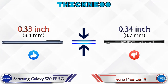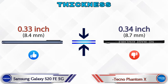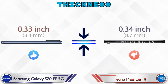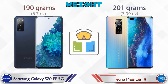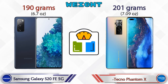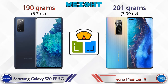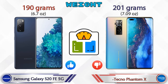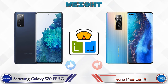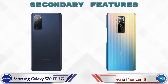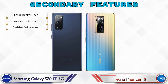Talking about thickness, the S20 FE 5G is 0.33 inches and the Phantom X is 0.34 inches, which is bigger than the S20 FE 5G. For weight, the S20 FE 5G is 190 grams and the Phantom X is 201 grams, which is heavier than the S20 FE 5G. Let's see the secondary features of both phones.